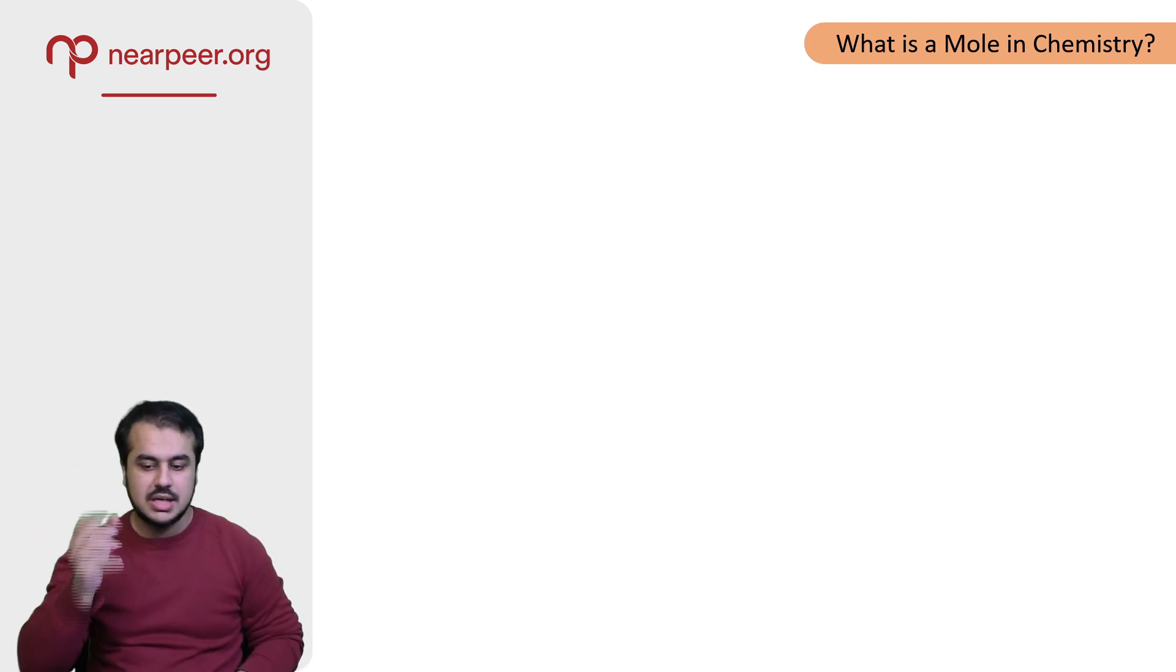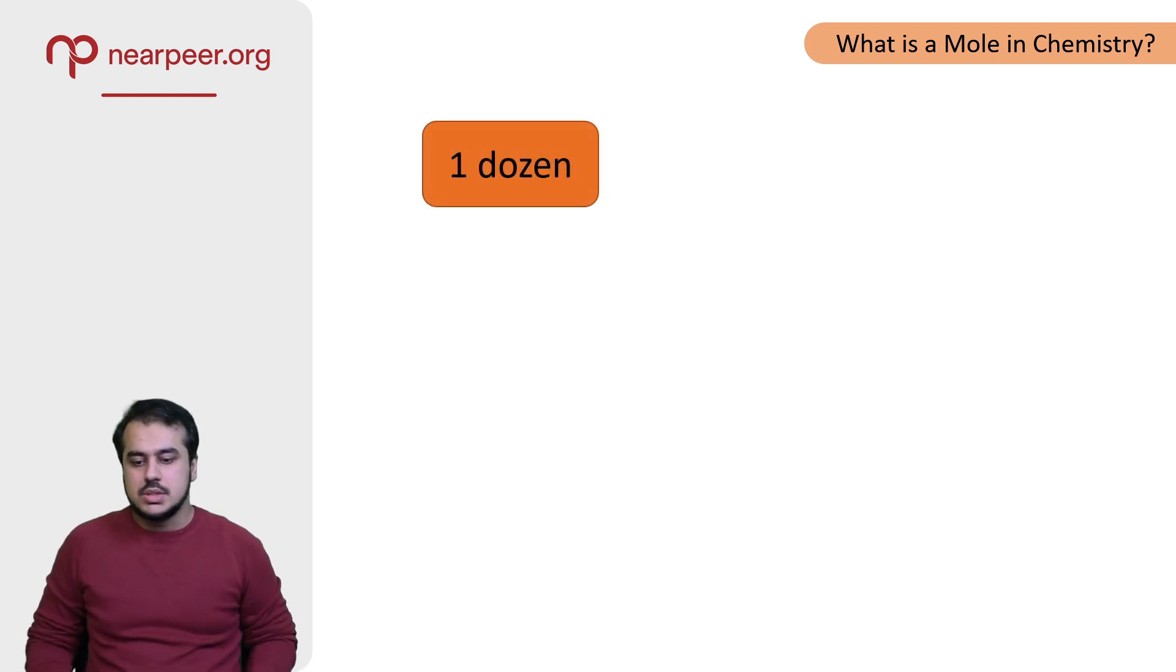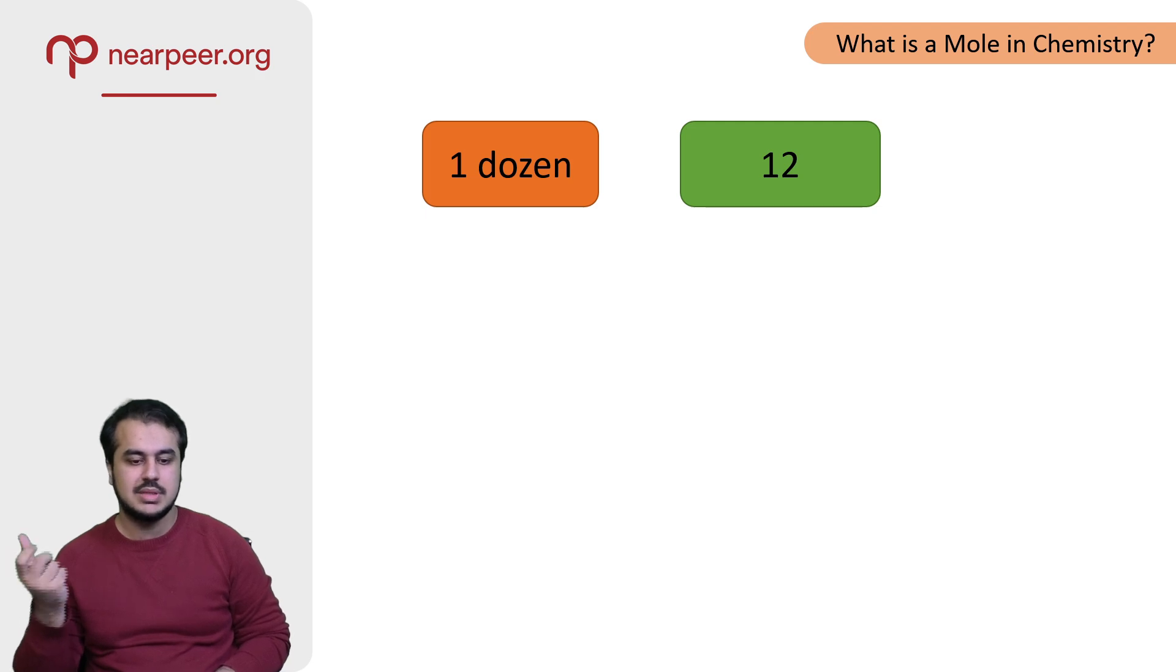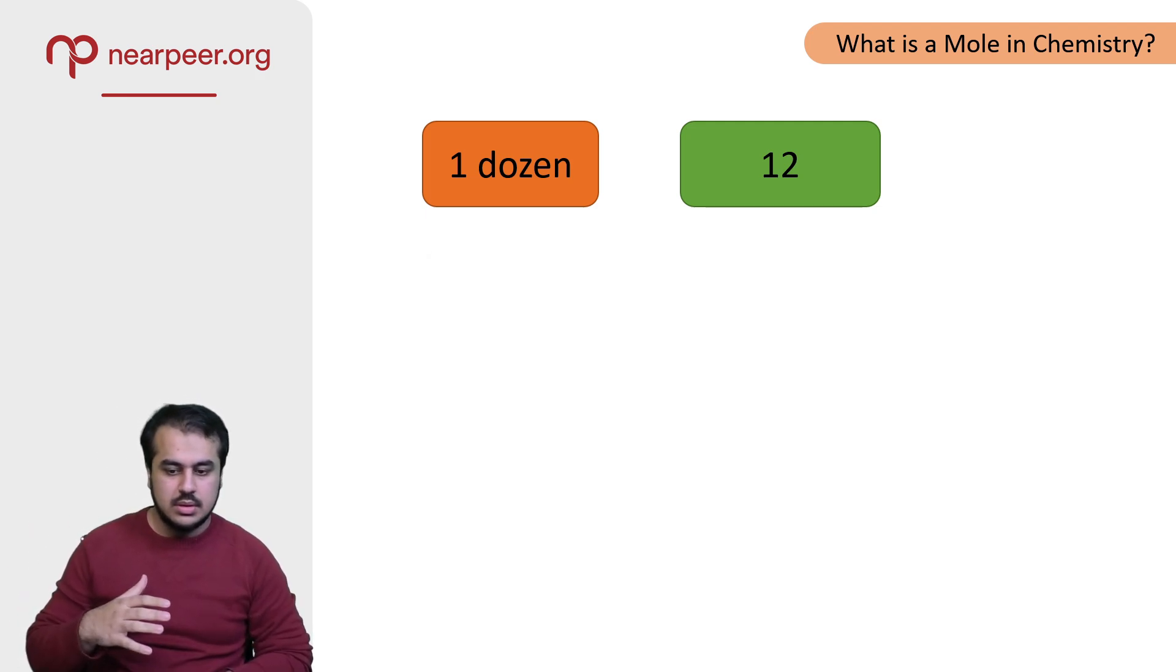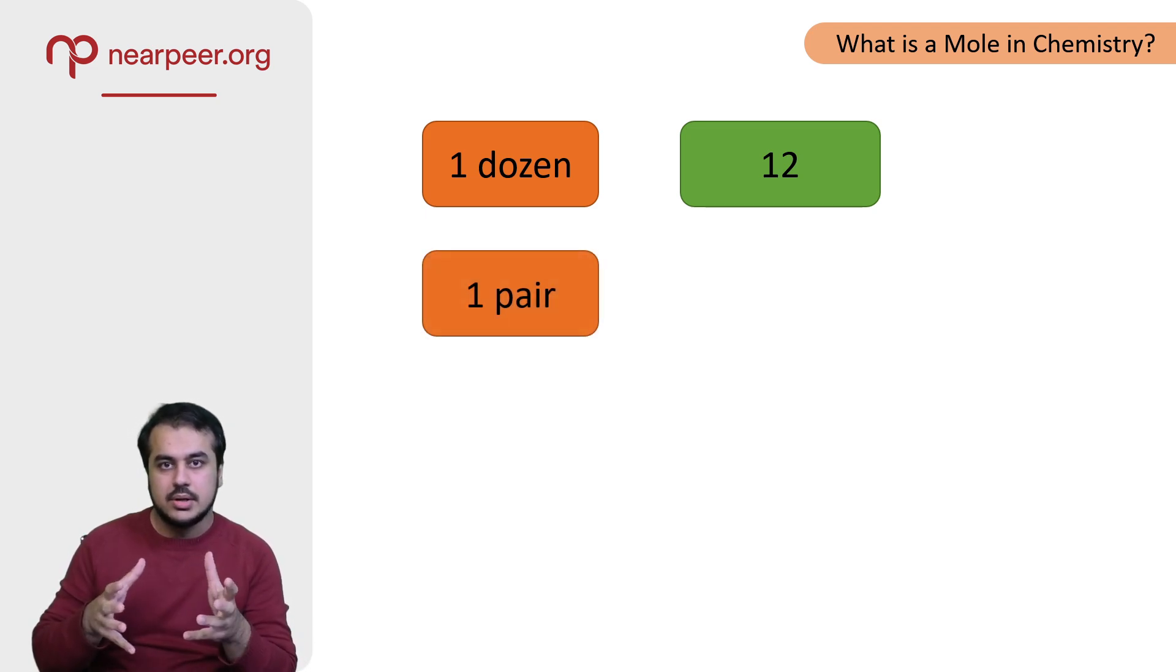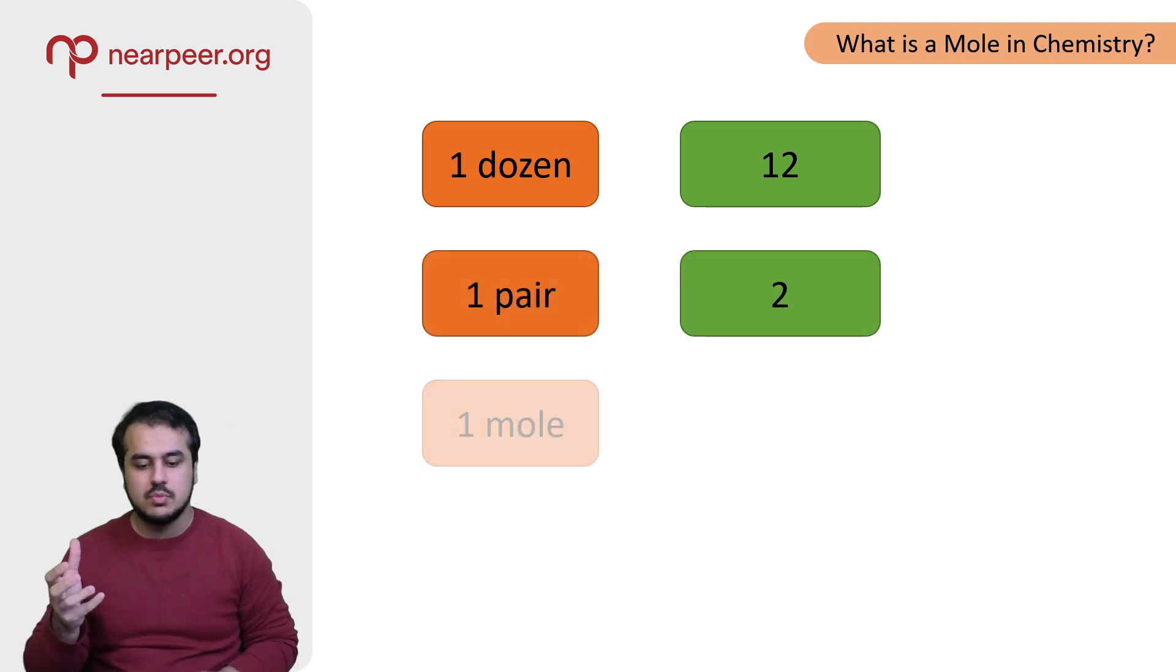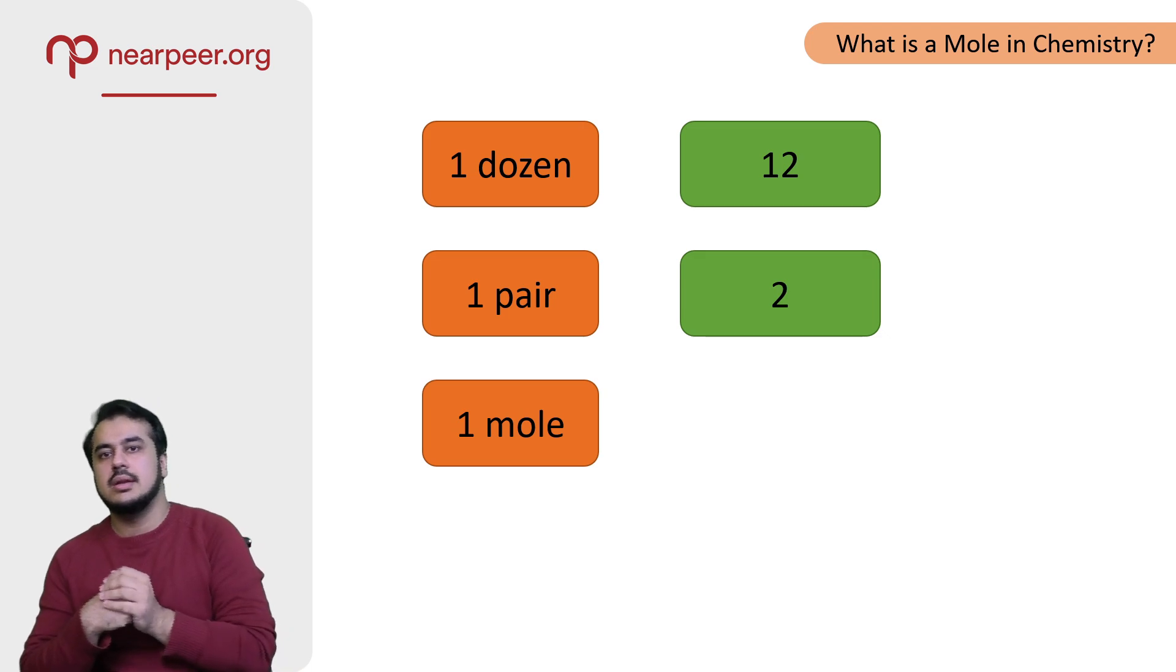Let's take a look at an example. When I say one dozen, I think you understand that we're talking about 12 - that's the number that a dozen represents. If I talk about a pair, I think you understand that it would mean 2.